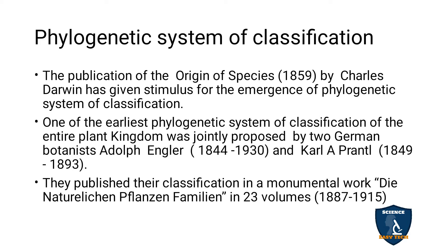One of the earliest phylogenetic systems of classification of the entire plant kingdom was jointly proposed by two German botanists: Rudolf Engler (1844–1930) and Karl Prantl (1849–1893). The Engler and Prantl system of classification is the earliest phylogenetic system. They published their classification in a monumental work, Die Natürlichen Pflanzenfamilien, in 23 volumes from 1887 to 1915.